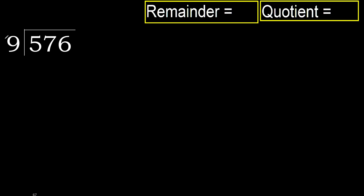576 divided by 9. 5 is less, therefore next. 57 is not less, therefore we work with 57. 9 multiplied by which number is nearest to 57, but not greater?